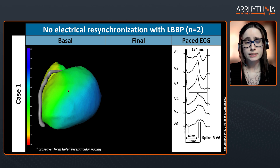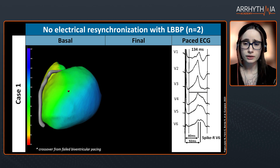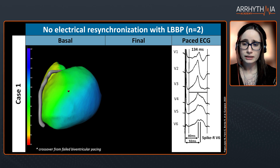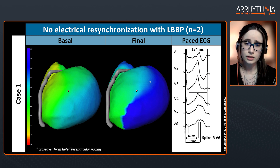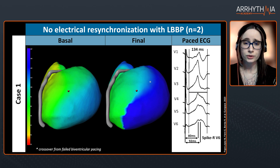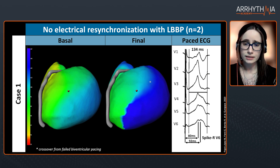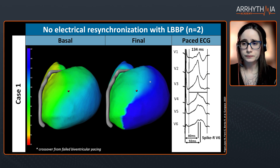We also saw in this study that in some patients with two peaks in V6, if we accept the first peak at 18 milliseconds as sufficient, analysis of the ECGI map shows this is not good for the patient — we are not correcting dyssynchrony. Therefore, if we have two peaks in V6, we should use the second peak as the criterion.